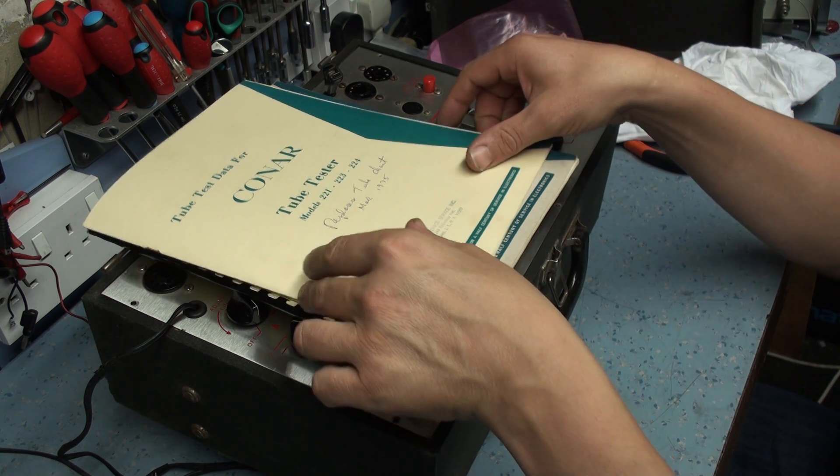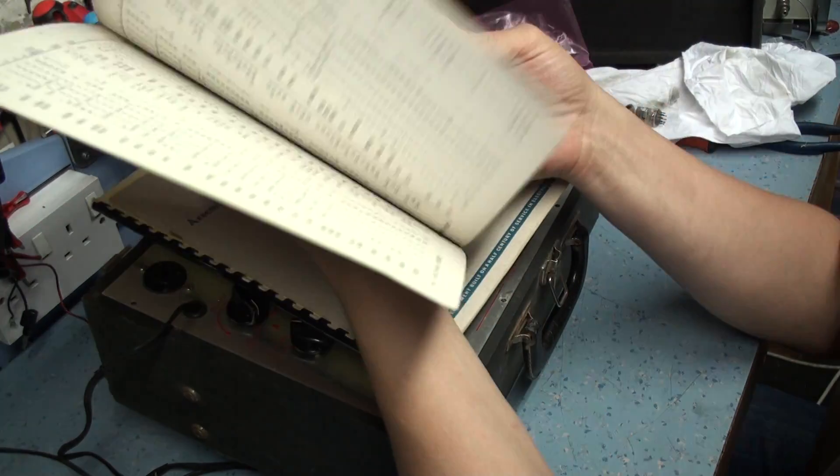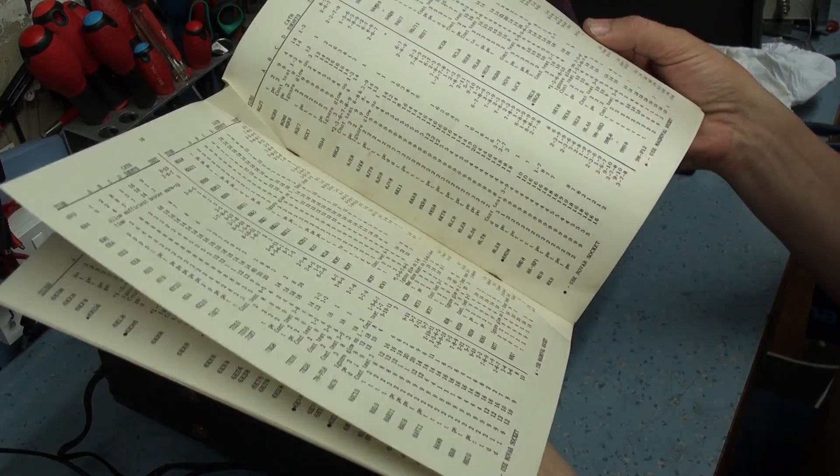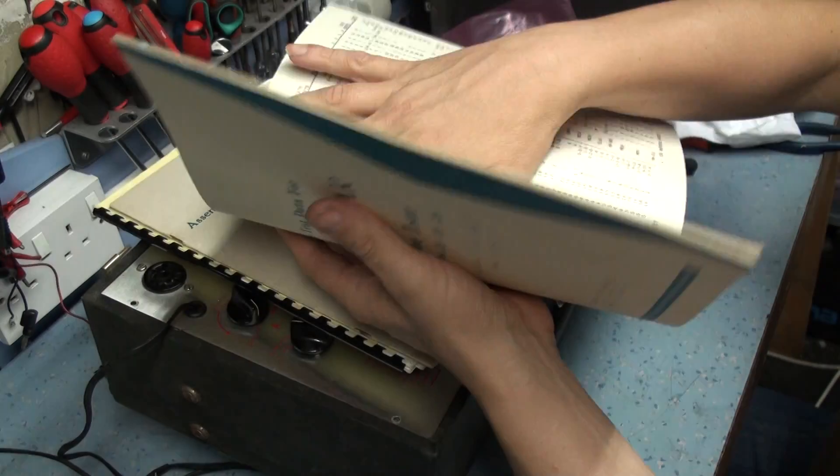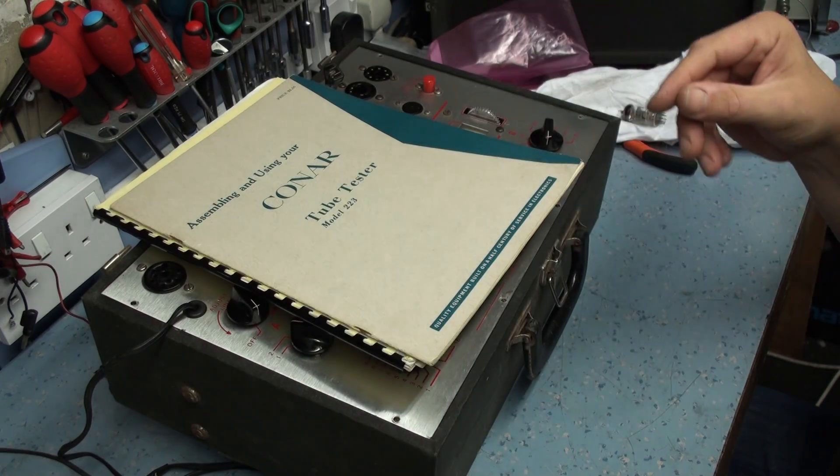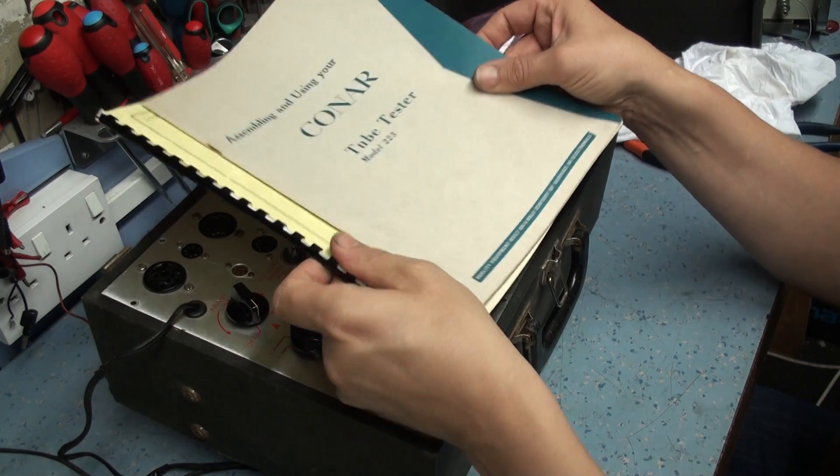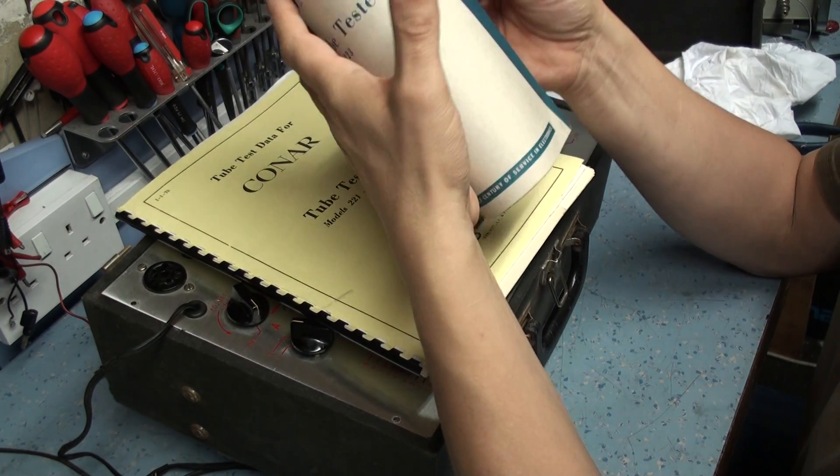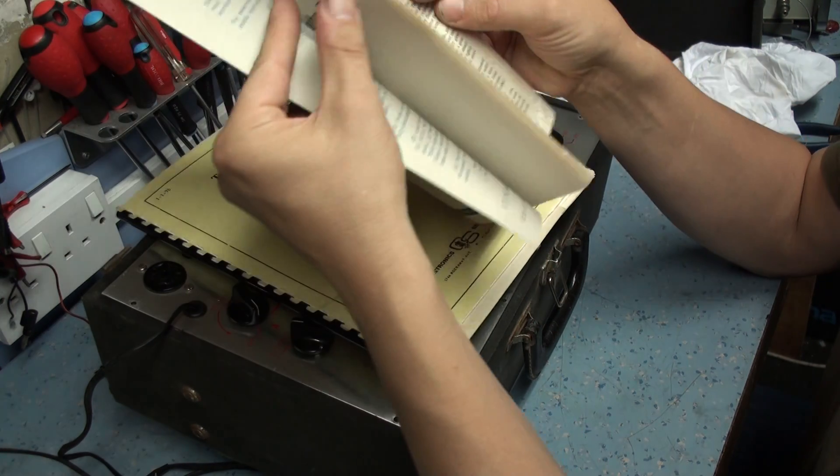But it has come with the original data charts, which are nice with all the charts, all the information on, mainly covering the United States lists of valves, you know, the US numbers, the 12AX7s and things like that.